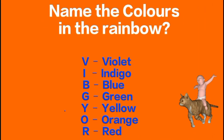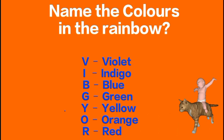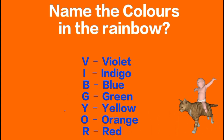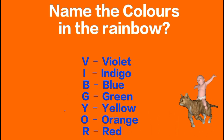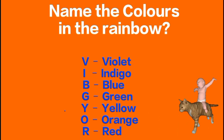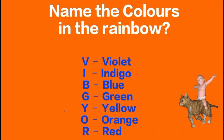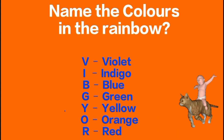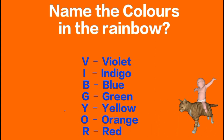Name the colors in the rainbow. V — violet, I — indigo, B — blue, G — green, Y — yellow, O — orange, R — red.